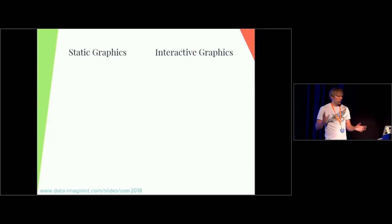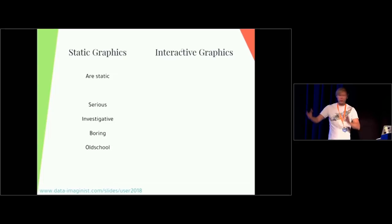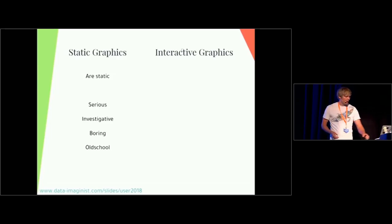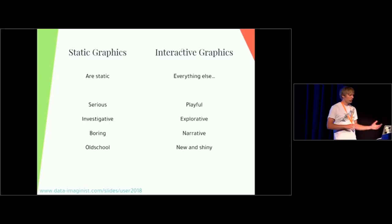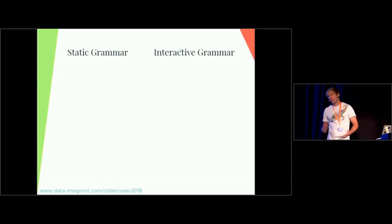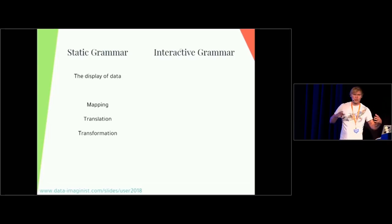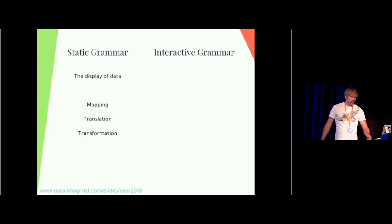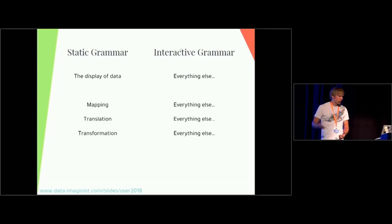This has led to a false dichotomy where on one side we have static graphics and on the other side we have interactive graphics. Static graphics are seen as serious, investigative, sometimes boring and old school. Interactive graphics have all these positive connotations — they're playful, explorative, narrative. This has bled over to how we think about grammar. The static grammar is very well defined and has a strong theoretical background, concerning the display of data, mapping data to visual properties, translating data with scales, maybe transforming data with statistical functions. The interactive grammar is kind of just everything else — everything that's not static.